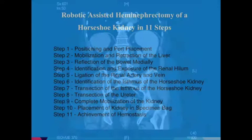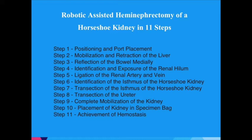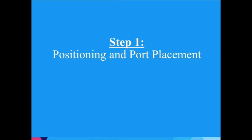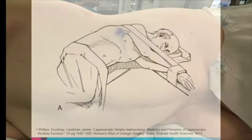After a discussion of all possible treatments, the decision was made to proceed with robotic-assisted heminephrectomy of the horseshoe kidney. The technique will be described in these 11 steps. The patient is placed in the left lateral decubitus position with the help of a bean bag. All pressure points are padded and the table is flexed slightly to open the abdominal space.